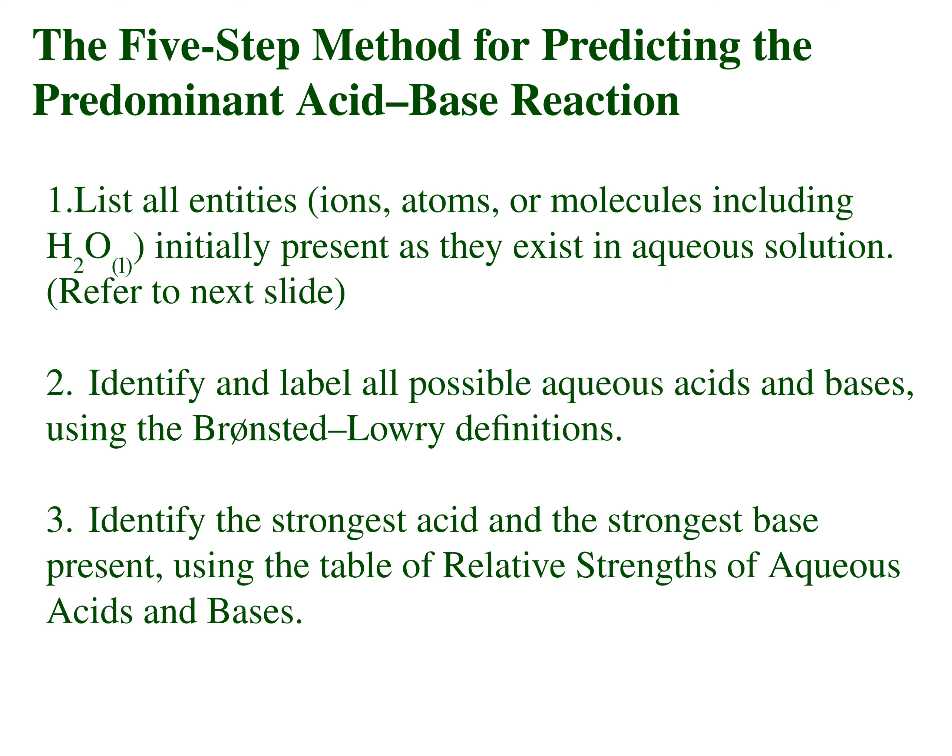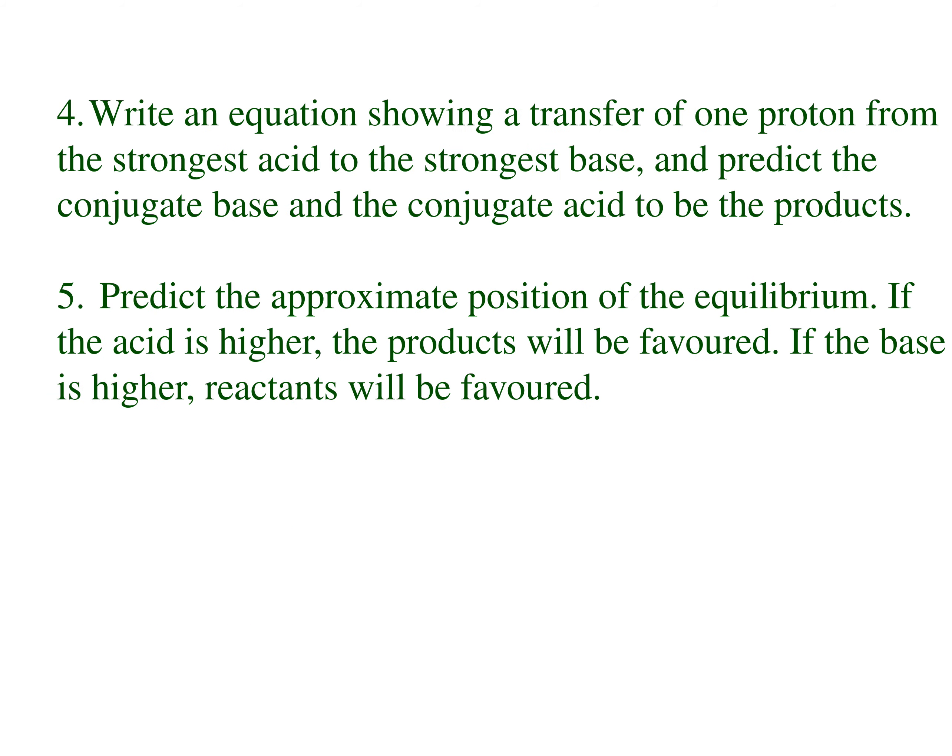Once we've listed all the entities present, we label all of the possible acids and all of the possible bases. Then we review the table to determine what the strongest acid and strongest base are — the strongest acid will be closest to the top left, and the strongest base will be closest to the bottom right. Then we write out the equation showing the transfer of a proton from the strongest acid to the strongest base, and use that to predict what our conjugate acid and conjugate base will be.